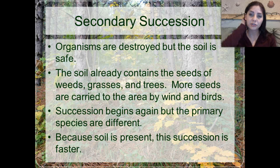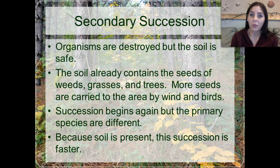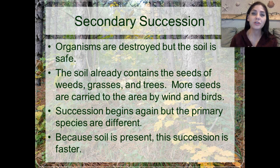Organisms are destroyed, but the soil is left intact. The soil already contains the seeds of weeds and grasses and trees. More seeds are then carried to the area by wind or birds or other sources. And succession begins again, but the primary species might be different. Because the soil is present, succession occurs much faster because we don't have to create soil — the soil already exists.